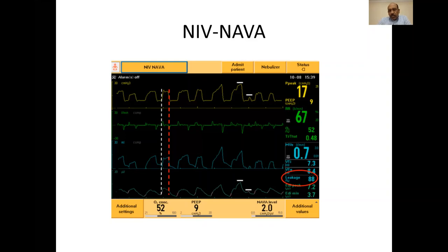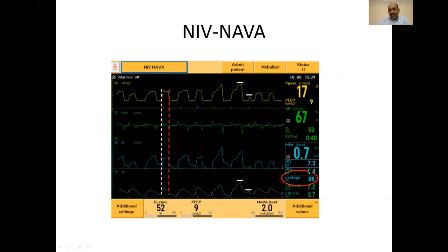This is a screenshot of NIV NAVA. The top wavy line is airway pressure in yellow color. The second wavy line is flow in green color. The third wavy line is volume in blue color, and light green is the EDI signal — the electrical activity of the diaphragm. If you look at the white dotted vertical line, this is the beginning of the inspiratory effort from the patient, and you can see the mechanical breath pressure starting at pretty much the same time. At the red dotted vertical line, as the respiratory effort ends going into expiration, the mechanical breath is also terminated. Even though the leak is 88%, the synchronization is really perfect — and that's the beauty of NAVA.